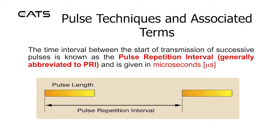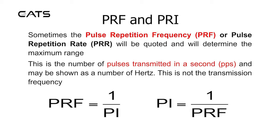The time interval between the start of transmission of successive pulses is known as the pulse repetition interval, generally abbreviated to PRI, and is given in microseconds. Sometimes the pulse repetition frequency (PRF), or pulse repetition rate (PRR), will be quoted and will determine the maximum range. This is the number of pulses transmitted in a second (PPS), and may be shown as a number of hertz. This is not the transmission frequency.